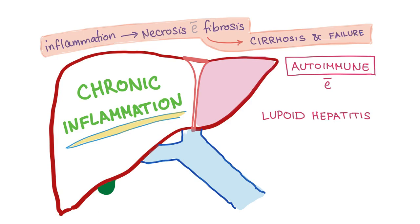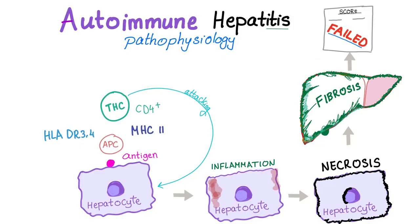As an autoimmune condition, it is associated with other autoimmune diseases such as Hashimoto's thyroiditis, Graves' disease, and lupus. That is why the previous name of this condition was 'lupoid hepatitis.' Regarding pathophysiology, it begins with an antigen that is recognized by antigen-presenting cells, which then present the antigen to the T lymphocytes.